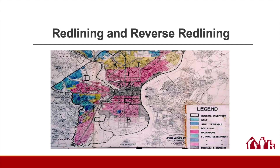I also wanted to touch on a few specific types of discriminatory conduct, just because you may hear these terms thrown around and it's useful to know what they do and don't mean in the fair lending context. Redlining is illegal under both the Fair Housing Act and ECOA. Redlining is a disparate treatment in which a lender provides unequal access to credit based on the characteristics of the residents of the area in which the person resides or in which the residential property to be mortgaged is located.